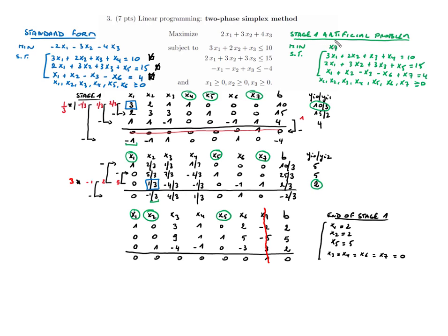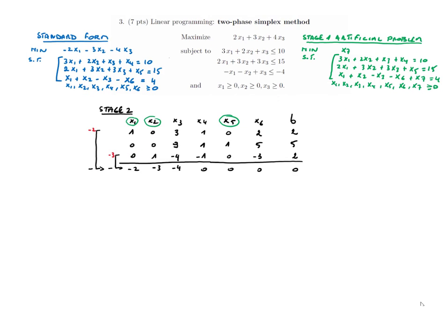To continue, we remove the column corresponding to the artificial variable x7 and remove its cost row. We replace the objective with the costs of the standard form: minus 2, minus 3, minus 4, 0, 0, 0. This begins stage two, which solves the original problem. The basic variables are x1, x2, and x5.